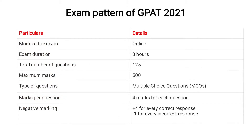Exam Pattern of GPAT 2021: Mode of examination — Online. Exam duration — 3 hours. Total number of questions — 125. Maximum marks — 500. Type of questions — Multiple Choice Questions. Marks per question — 4 marks for each question. Negative marking applies: plus 4 marks for every correct answer, minus 1 for every incorrect answer.